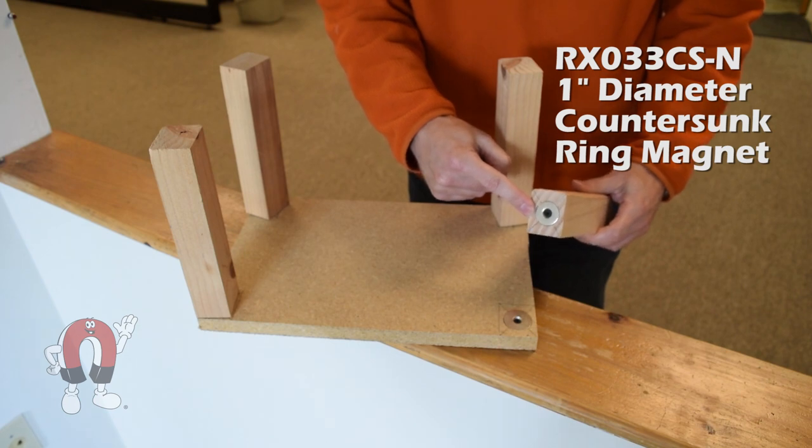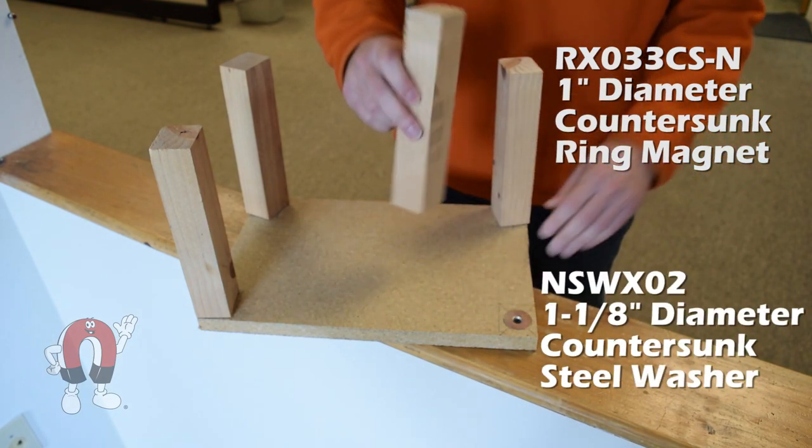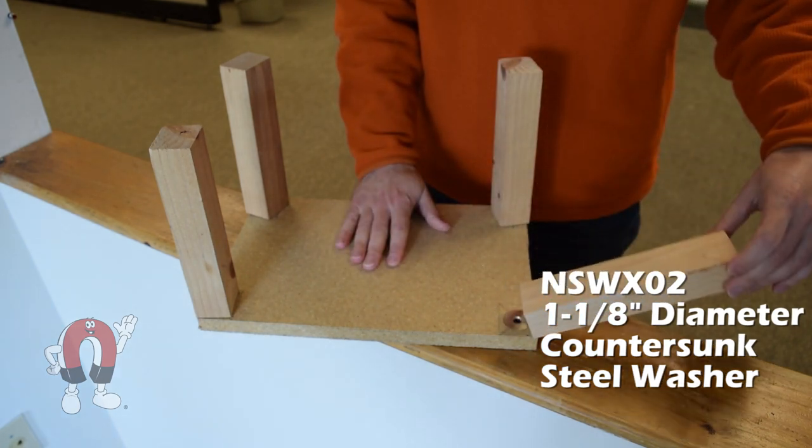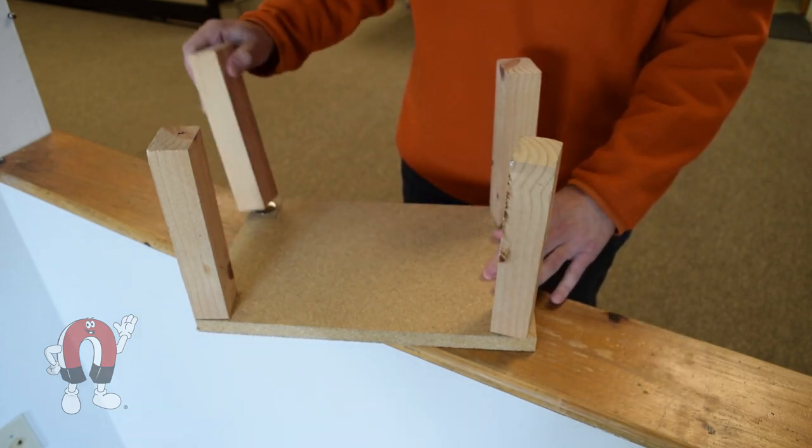Each leg uses a strong one-inch diameter neodymium magnet attracting to a steel piece in the top of the footstool. They stick well. It takes something like 15 pounds of force to pull up one of these legs.